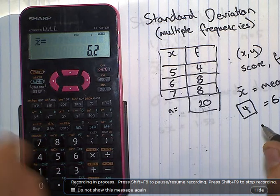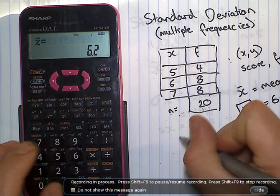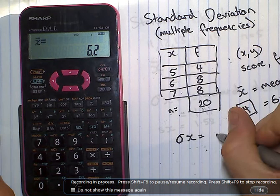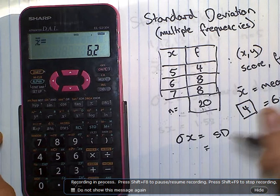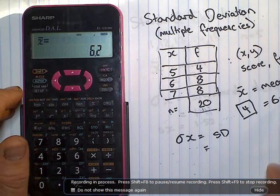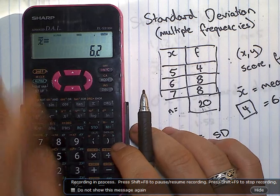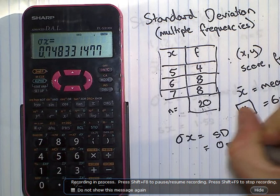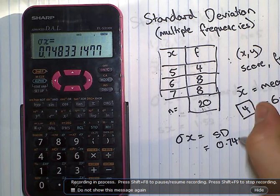The next one we're going to look for is the standard deviation, sigma X. This measures the spread of the data from the average. Alpha, six, equals. Zero point seven five.